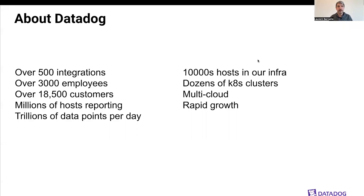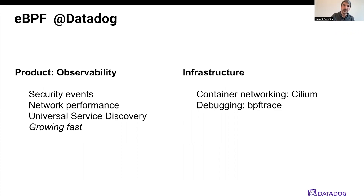A few words about DataDog. We're an observability company with many customers, about 3,000 employees, and many different integrations. Today we're not going to talk about the product — we're going to talk about the infrastructure behind it, which consists of dozens of Kubernetes clusters and tens of thousands of hosts. We already use eBPF extensively at DataDog, both on the product side for observability purposes and for our infrastructure — for container networking and for debugging using bpftrace, for instance.